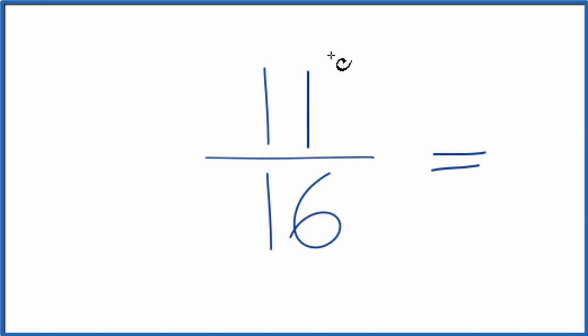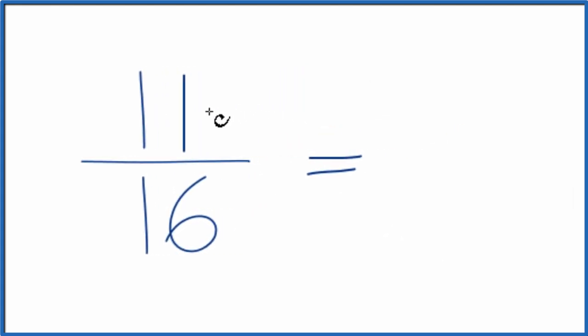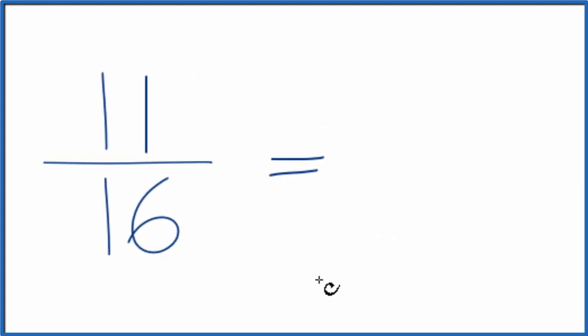To do that we need to find a common factor, something that goes into 11 and 16. We're looking for the greatest common factor. The thing is, the only number that goes into 11 and 16 evenly is 1.